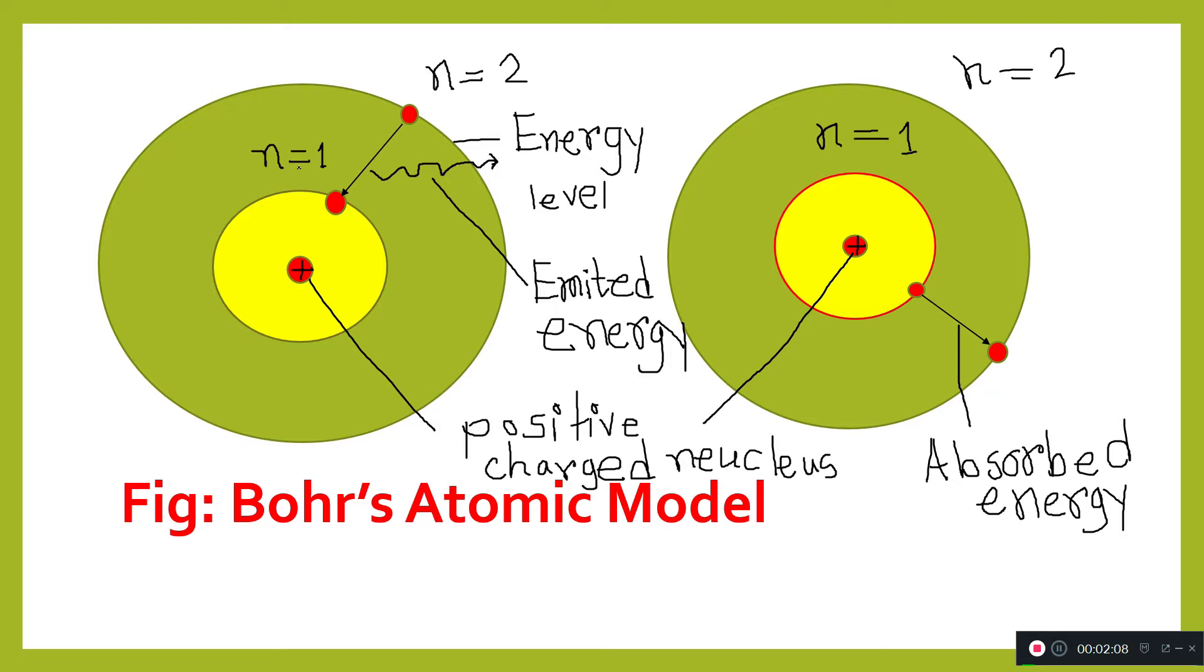In other words, if n equals 1, the principal energy level is K. When n equals 2, the principal energy level is L. When n equals 3, M is the principal energy level. When n equals 4, N is the principal energy level.